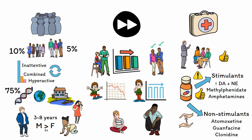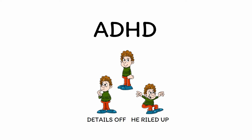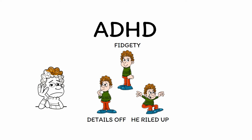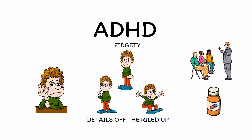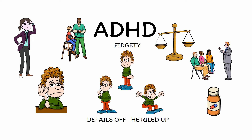To wrap up: ADHD is a neurodevelopmental disorder beginning in childhood that often continues into adulthood. Signs and symptoms involve inattention, as captured in the DETAILS OFF mnemonic, and/or hyperactivity, as captured in the HE-RILED UP mnemonic. Use the FIDGITY mnemonic to remember diagnostic criteria and important conditions to exclude. While symptoms can be incredibly impairing, effective treatments are available. However, there are significant downsides to overdiagnosis, including risks of overtreatment and stigma, so other factors that can mimic ADHD should always be ruled out. Working with someone who has ADHD can be gratifying, as treatment often leads to improvements that are both immediate and dramatic.